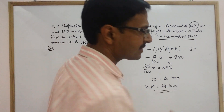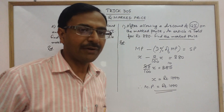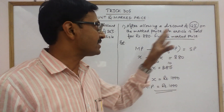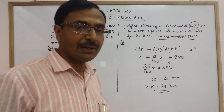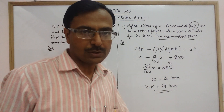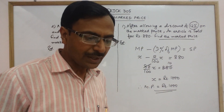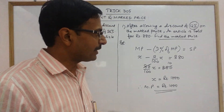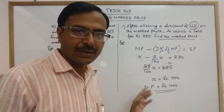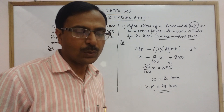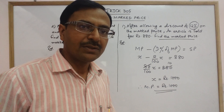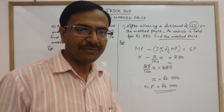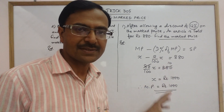With a little practice, you can find the mark price of articles when discount and selling price are given orally. If you use pen and paper, it will take you hardly 3 to 4 seconds with half an hour of practice on this concept.